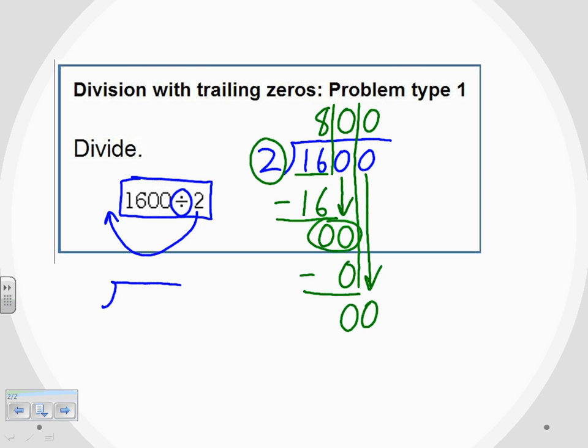So 0 times 2 gives us 0. Subtract. And I again have 0 minus 0, which is 0. Now, I don't have any other digits out there to bring down, so that tells me that I'm finished with the problem.